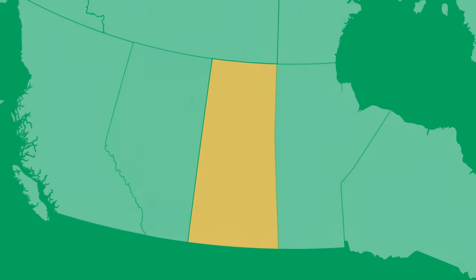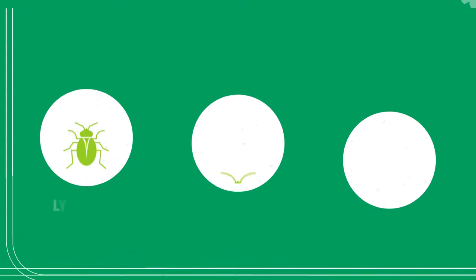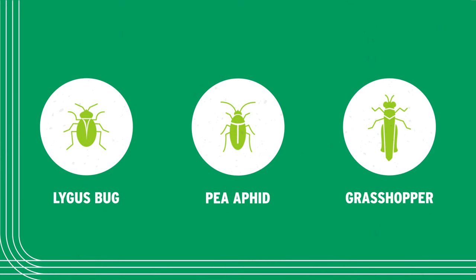Three of the biggest insect challenges in Saskatchewan pulse crops are ligus bugs, pea aphids, and grasshoppers.